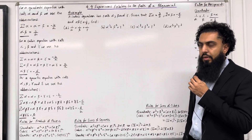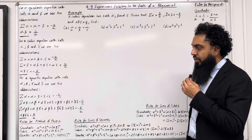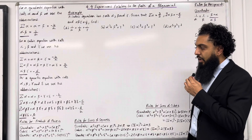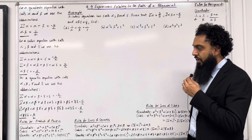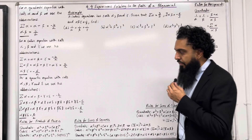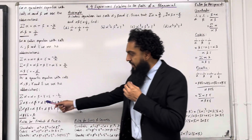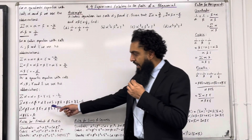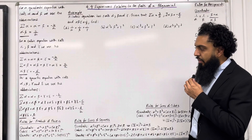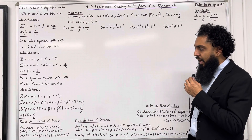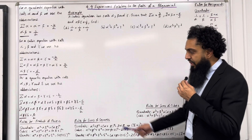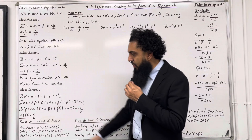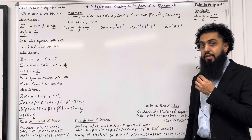Sum of alpha beta, the product of pairs of roots, is equal to alpha beta plus alpha gamma plus alpha delta plus beta gamma plus beta delta plus gamma delta, which is equal to c over a. Sum of alpha beta gamma, the product of triples, is equal to alpha beta gamma plus alpha beta delta plus alpha gamma delta plus beta gamma delta, which is equal to minus d over a. Alpha beta gamma delta is equal to e over a.